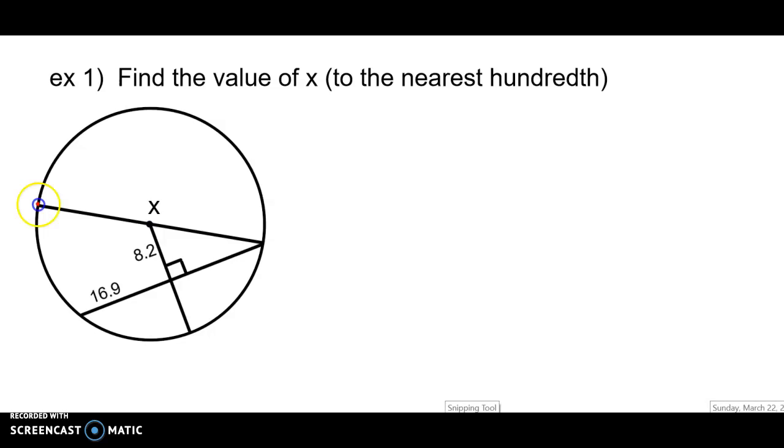Now what I need you to notice is X is the diameter of the circle. We've got an 8.2, that's this distance here. We've got a 16.9, that's this distance right here. This must also then be 16.9 because of the right angle. That means the radius bisects the chord.